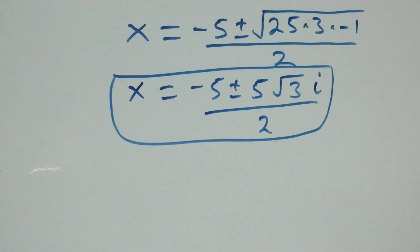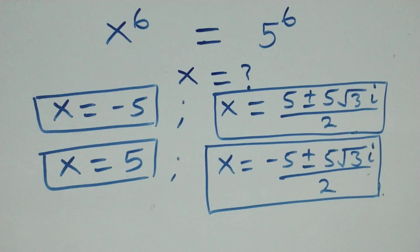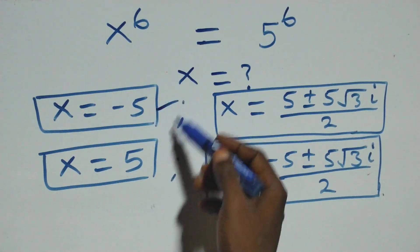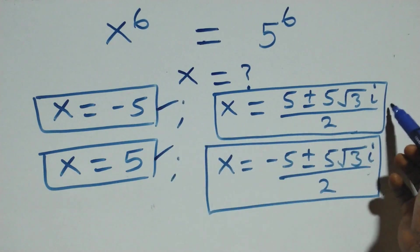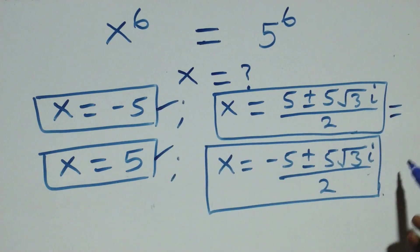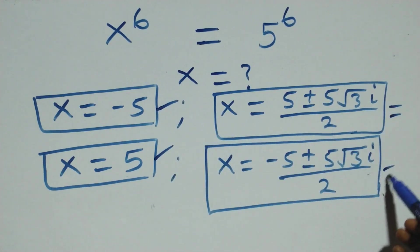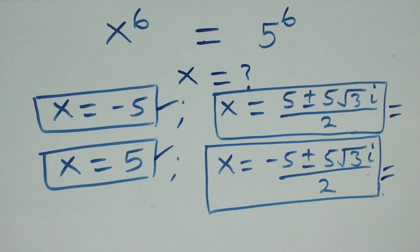Therefore, all together here we have 6 solutions to this given problem: 2 real solutions, 2 complex solutions from the first case, and 2 complex solutions from the second case. Thank you for watching.